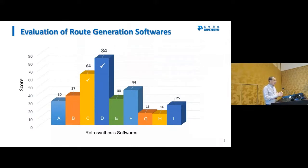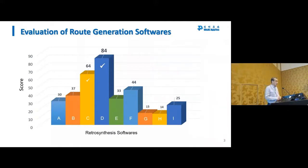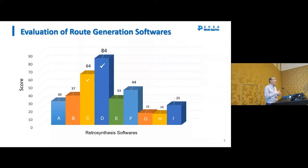We have a team of very experienced chemists who selected 60 highly diverse, very challenging targets to do the first round of evaluation. The team came back and said that the software quality varies from hardly useful to quite useful. With Software D we did further evaluation and incorporated it into our workflow. This kind of software is not perfect — it requires a lot of human intervention to improve whatever the outcome is — but it is fit for purpose. It allows us to diversify and to consider things we haven't thought about.